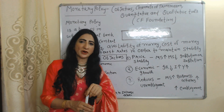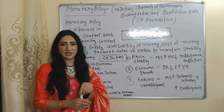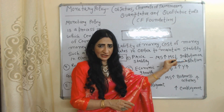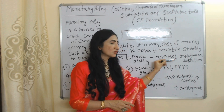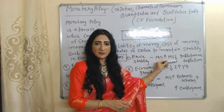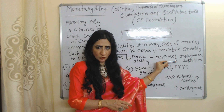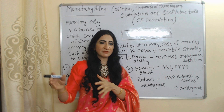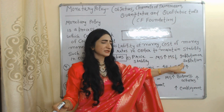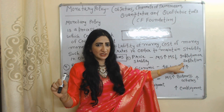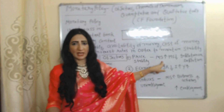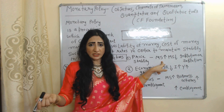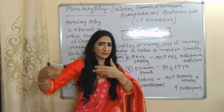Through monetary policy, the central bank tries to maintain price stability. For example, in order to cure inflation, the central bank reduces money supply. As money supply reduces, demand reduces, prices reduce — eventually inflation can be in control. On the other hand, in case of deflation, the central bank increases money supply. As money supply increases, demand increases, prices also increase — eventually deflation will disappear from the economy.